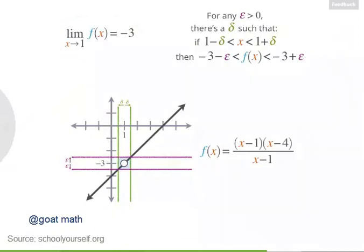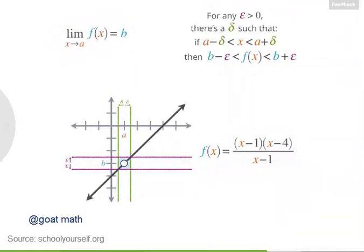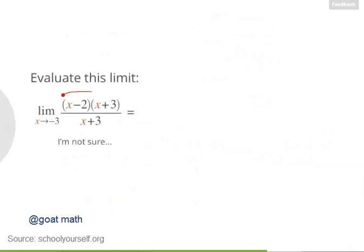Let's write the general statement for a limit. Suppose we center the vertical tube around x equals a and the horizontal tube around y equals b. Then we replace 1 with a and negative 3 with b to get the formal definition of the limit of f of x as x approaches a. In practice, you'll typically evaluate limits using a few tricks and rules, or by graphing the function. Try evaluating the limit of x minus 2 times x plus 3, over x plus 3, as x approaches negative 3, by simplifying the function or graphing it.